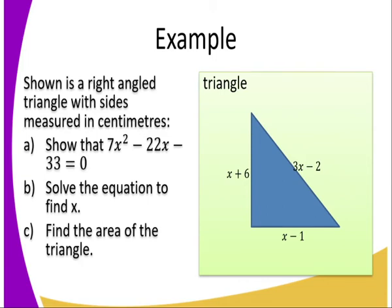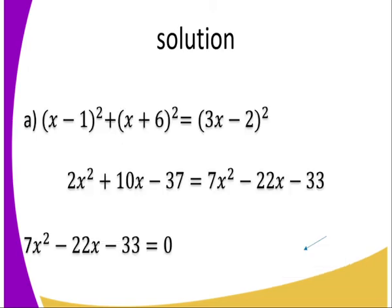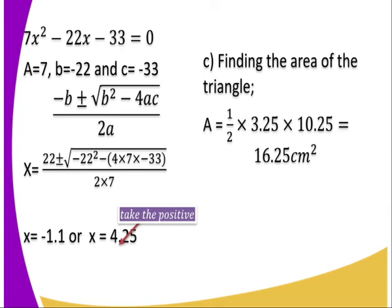Let's take another example. We have a right-angled triangle. We have to show that a given equation is equal to zero, and we need to find x and then the area. We take the dimensions and apply Pythagoras' theorem: a² + b² = c². So we have 2x² + 10x − 37 = 7x² − 22x − 33, which gives us 7x² − 32x − 33 = 0. We have shown what we were supposed to. After that, using the quadratic formula, we get x = −1.1 or x = 4.25.